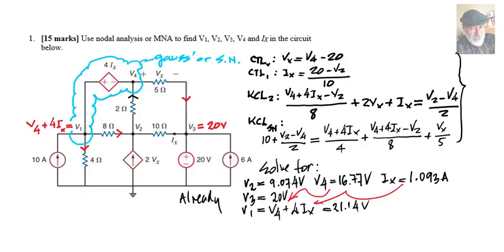VX turns out to be from the figure V4 minus V3 which is 20 volts already. So that is CTLV: VX is V4 minus 20 volts. CTLI corresponding to this controlling current IX, IX is V3 minus V2 over 10 ohms, but V3 is 20. Here is your controlling equation for that current IX.